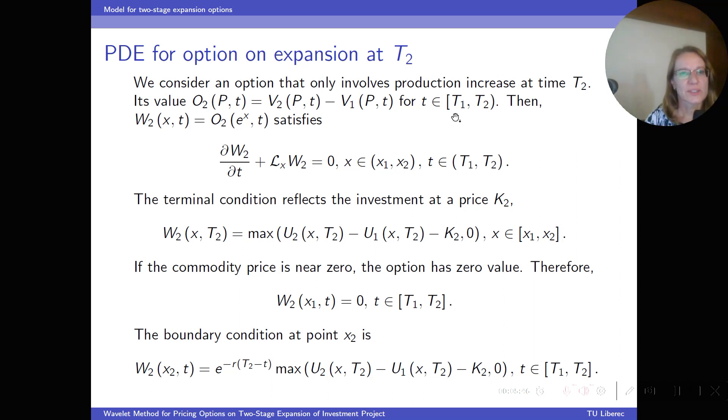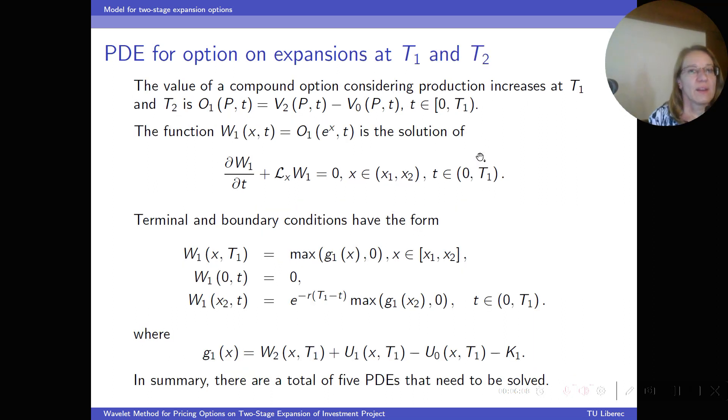Now we consider an option to increase production, but only at time T2. This option is represented by a similar equation as the previous one and accompanied by appropriate terminal and boundary conditions, which depends on the previously computed functions. And now finally, the value of option to increase production both at time T1 and T2 is determined by this last equation. So in summary, there are a total of five equations that need to be solved successively.